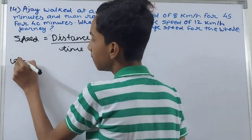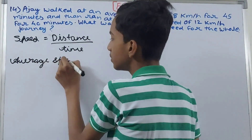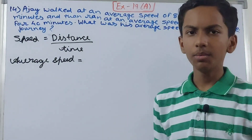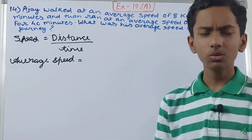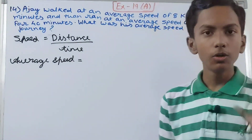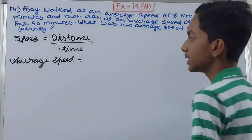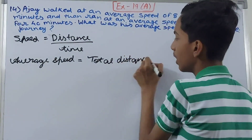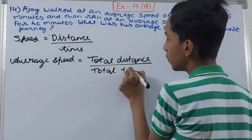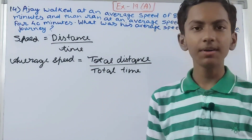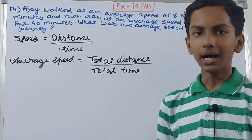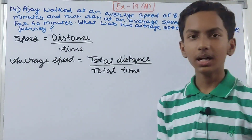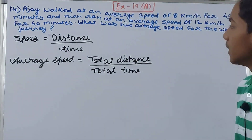When finding average speed, we will have a number of distances — like 2 km, 3 km, 5 km, and so on. To find the average speed, we add the distances to get total distance, divided by total time. Total time is used because you are given different times for different distances — not one uniform time.